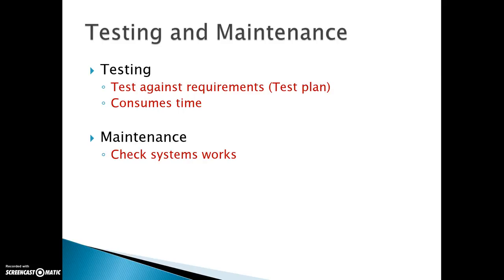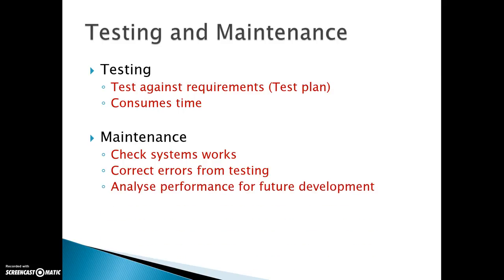During maintenance, any errors found in testing are corrected and you maintain the system to check it is working correctly. You may not do this every time, but you might do it once a month to see what improvements need to be made — whether an update is needed or what needs to be improved. You also look for future development. By doing this maintenance regularly, you can see how the new system is working, and for future plans, if you want to upgrade or update the system, you know what's required.